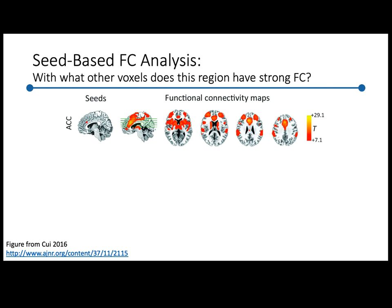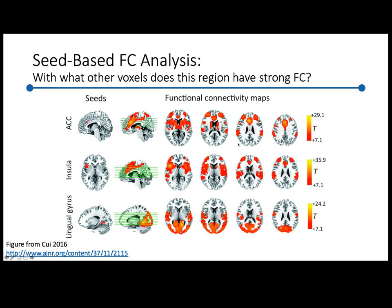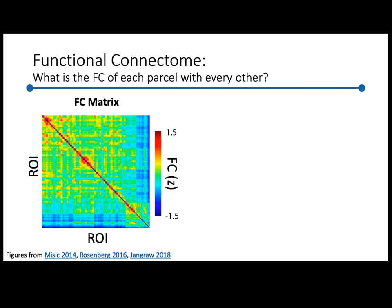Seed-based functional connectivity analysis is when you pick an ROI and ask: what is the connectivity of this ROI with all the other voxels in the brain? For example, we know something weird is going on with the ACC — let's put a seed there and see how its connectivity with all other voxels changes based on a task or group membership. We can do that for multiple different ROIs and see that different seeds have different voxels that they're functionally correlated with.